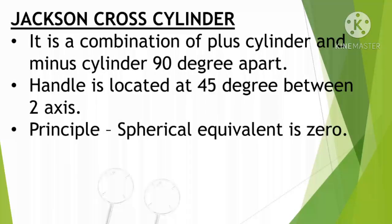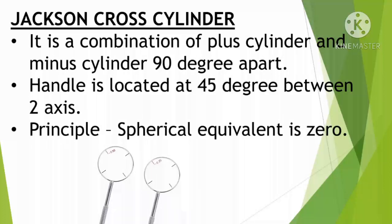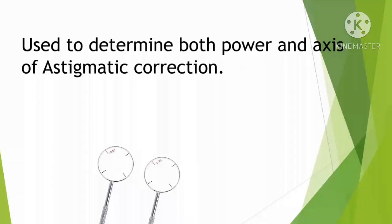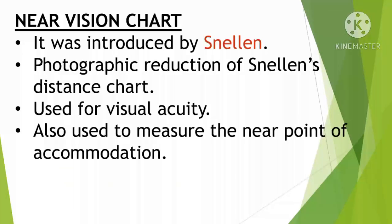The Jackson Cross Cylinder (JCC) is a combination of a plus cylinder and a minus cylinder placed 90 degrees apart. The JCC handle is attached at 45 degrees to both axes. We use the JCC to determine the power and axis of astigmatism.